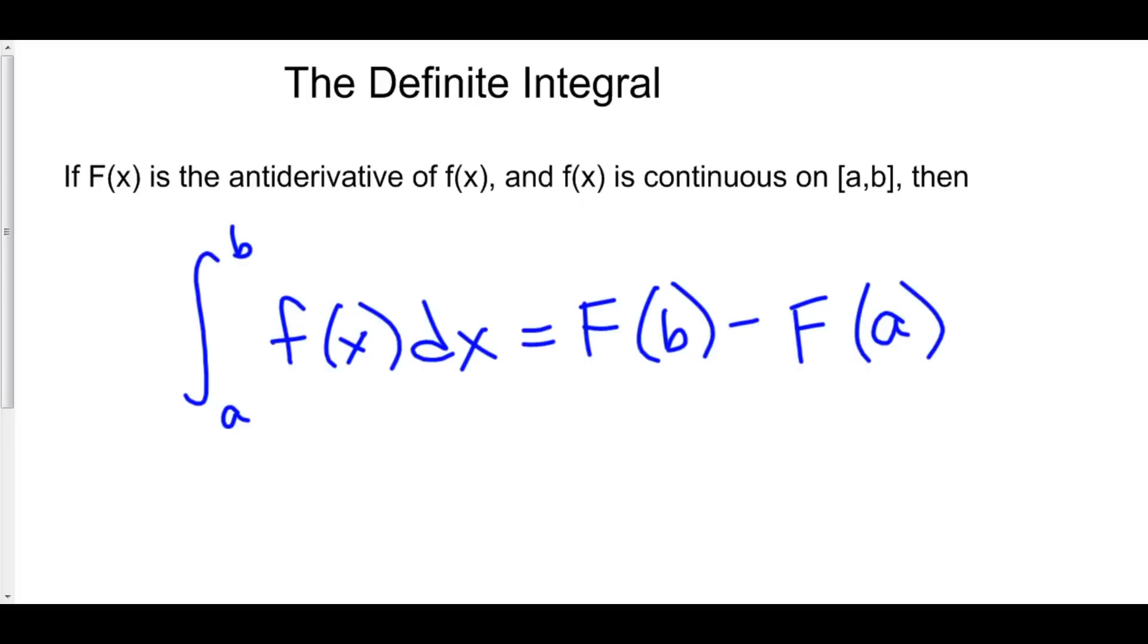It says that if big F of x is the antiderivative of little f of x, and furthermore that f of x is continuous on the interval from a to b, then the integral from a to b of f of x dx is equal to the antiderivative of b minus the antiderivative of a.